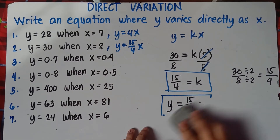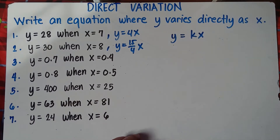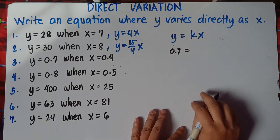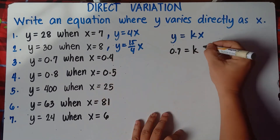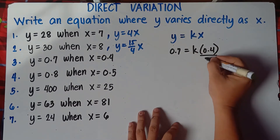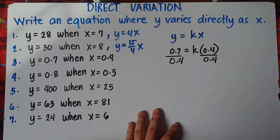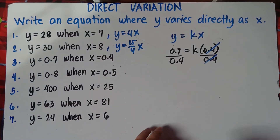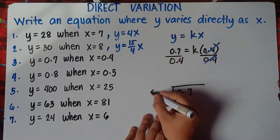Let's try number 3. I hope you're still with me — easy, right? For number 3, we have y equals 0.7 and x equals 0.4. So this will be 0.7 equals k times 0.4. To get the value of k, divide both sides by 0.4, then cancel this out. So we need to compute 0.7 divided by 0.4.